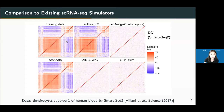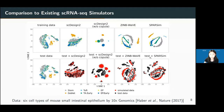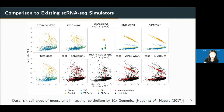This is a t-SNE visualization of real data, synthetic data, and other simulators' results. We overlay individual datasets to create a joint visualization. This clearly shows that our synthetic data in red is most similar to the real data in black. Without copula, ZINB-wave, and sparsene show clear differences. PCA visualization again confirms the similarity between SC Design 2 synthetic data and real data, but not so for ZINB-wave and sparsene.